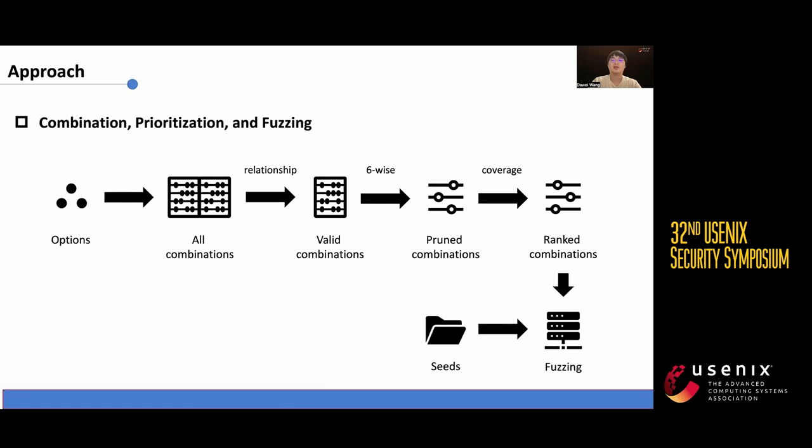When encountering new paths, our fuzzer records the current seed and the corresponding option combinations for later reproduction.